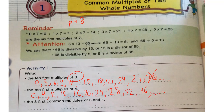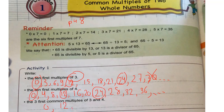Find the first three common multiples of three and four. When I say common, I mean the numbers that are in both table three and table four at the same time. Zero is written in both, so it's a common multiple. 12 is up and 12 is down, so 12 is a common multiple. Also 24 here and 24 here, so 24 is a common multiple. The three common multiples are 0, 12, and 24.